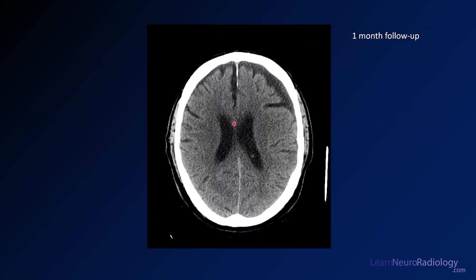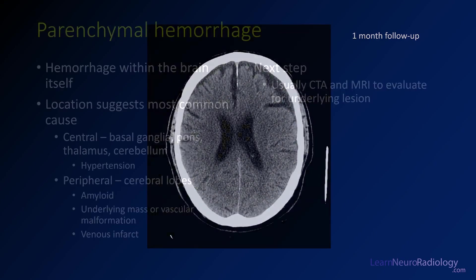Following this patient up after a month, the collection has become lower density and smaller, with much less mass effect. But you still have a chronic collection because the brain doesn't go all the way to the calvarium the way it does on the right.